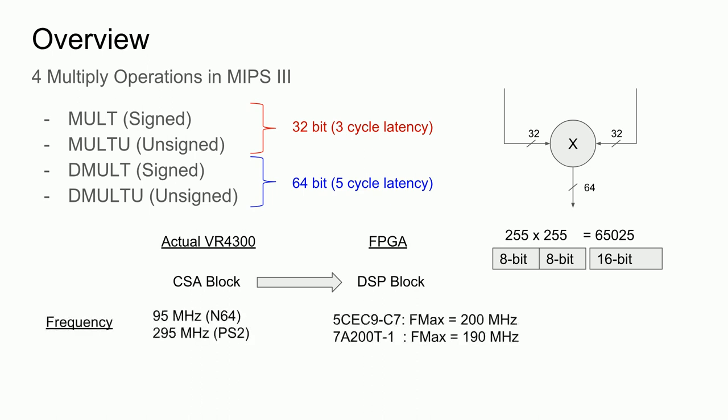The first problem is operating frequency. The VR4300 in the N64 operated at around 95 MHz, and the R5900 in the PlayStation 2 operated at around 295 MHz. The two main devices that I have considered in previous videos are the Altera Cyclone 5E C7 speed device and the Xilinx Arctic 7-1 speed device, having 200 MHz and 190 MHz maximum clock frequencies of their DSP blocks, respectively. These are both fast enough for the VR4300, but neither is fast enough for the PlayStation 2.